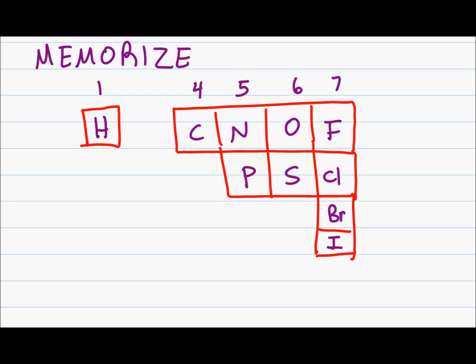The reason you want to memorize these is you don't want to have to keep referring back to the table to understand the trends. The group numbers above these elements help you memorize how many valence electrons. Something like carbon has four, phosphorus and nitrogen five, oxygen and sulfur six, and halogens have seven.